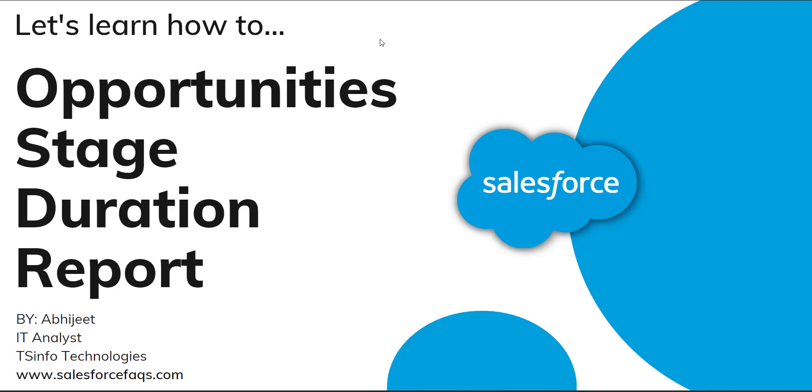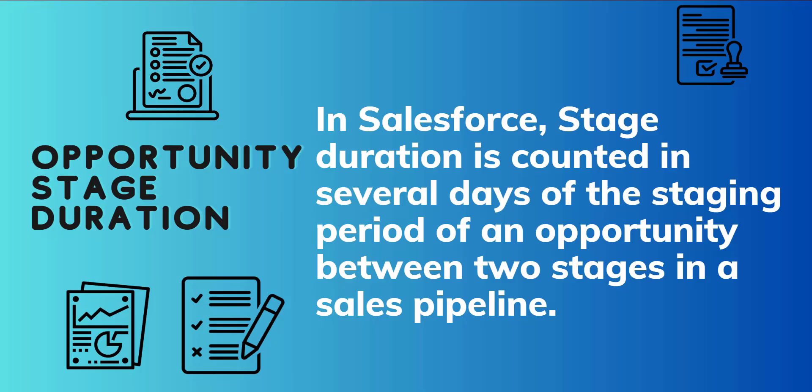Hello everyone and welcome to the channel. Today in this video we are going to learn about creating an opportunity stage duration report in Salesforce. Stage duration is the number of days, or staging period, of opportunities between two stages in the sales pipeline — specifically from the date when the opportunity changes from the previous stage to the current stage to the present day.